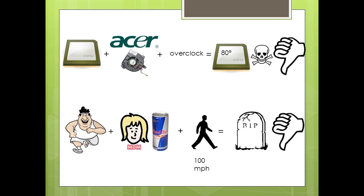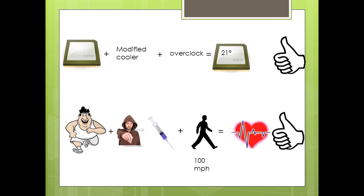Therefore, if the fat guy's dealer gave him steroids — which will act as a modified cooler — he will be able to run at a speed faster than he should with ease. In this example, the steroids acted as a modified cooler. One form of a modified cooler is water cooling. So what's the problem with just buying a more powerful fan to cope with the increased heat?